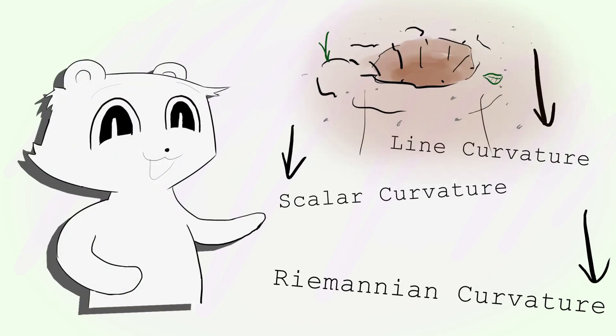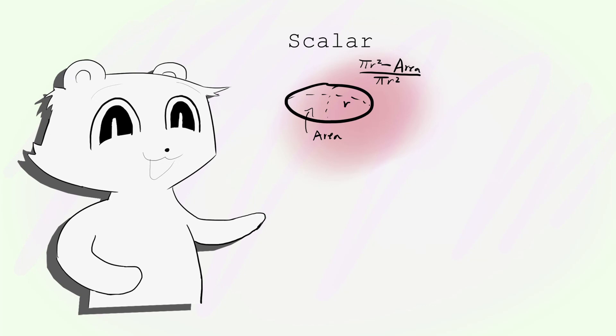Now that we have bottomed out the rabbit hole, let's take a step back to learn about Ricci curvature, the kind of curvature used in general relativity.